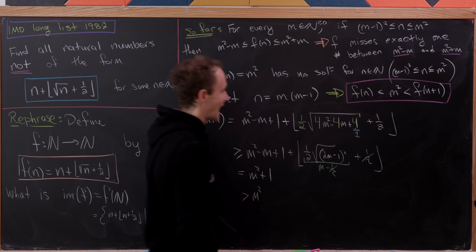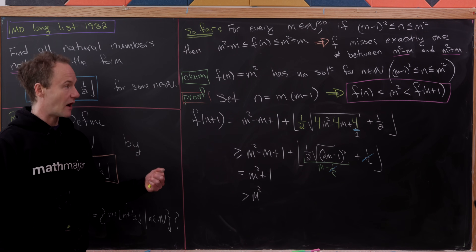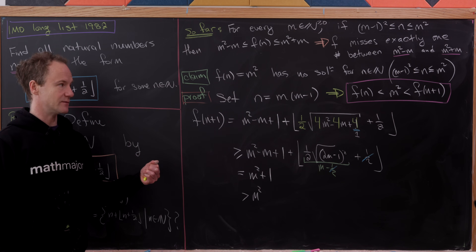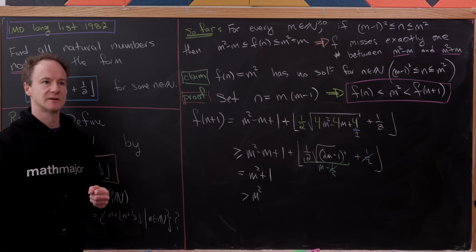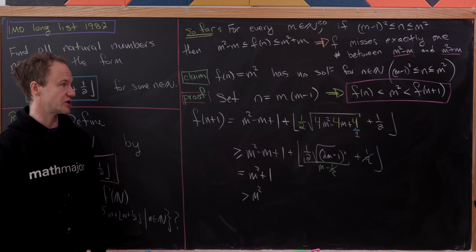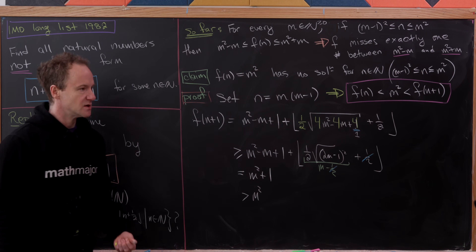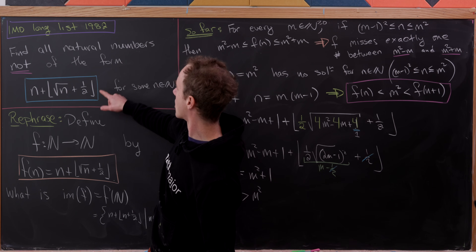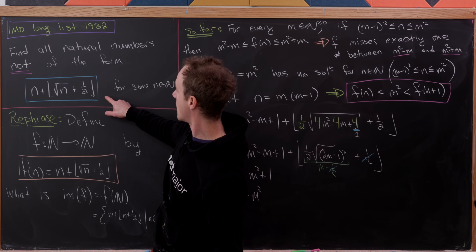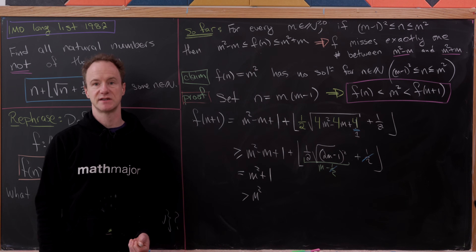That's exactly what we needed. We found n = m(m−1) with f(n) < m², and the very next value n+1 gives f(n+1) > m². Since f is strictly increasing, there are no integers between n and n+1, so m² is never achieved. Therefore, the natural numbers that are not of the given form are precisely all the perfect squares.